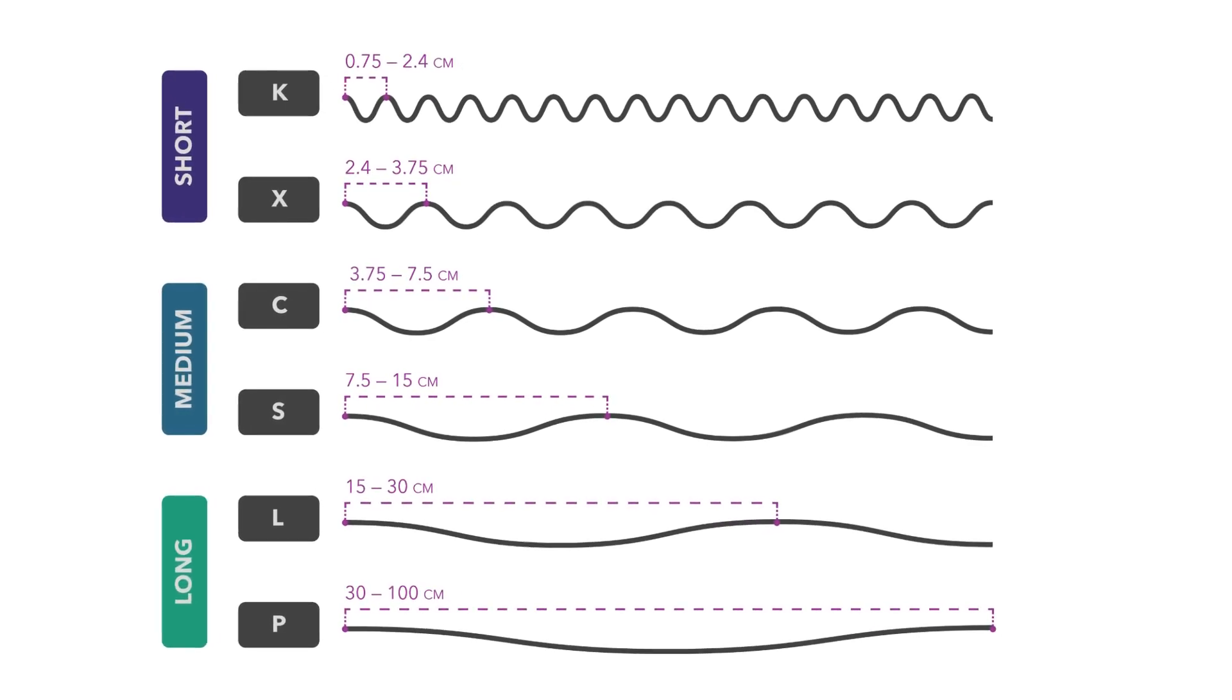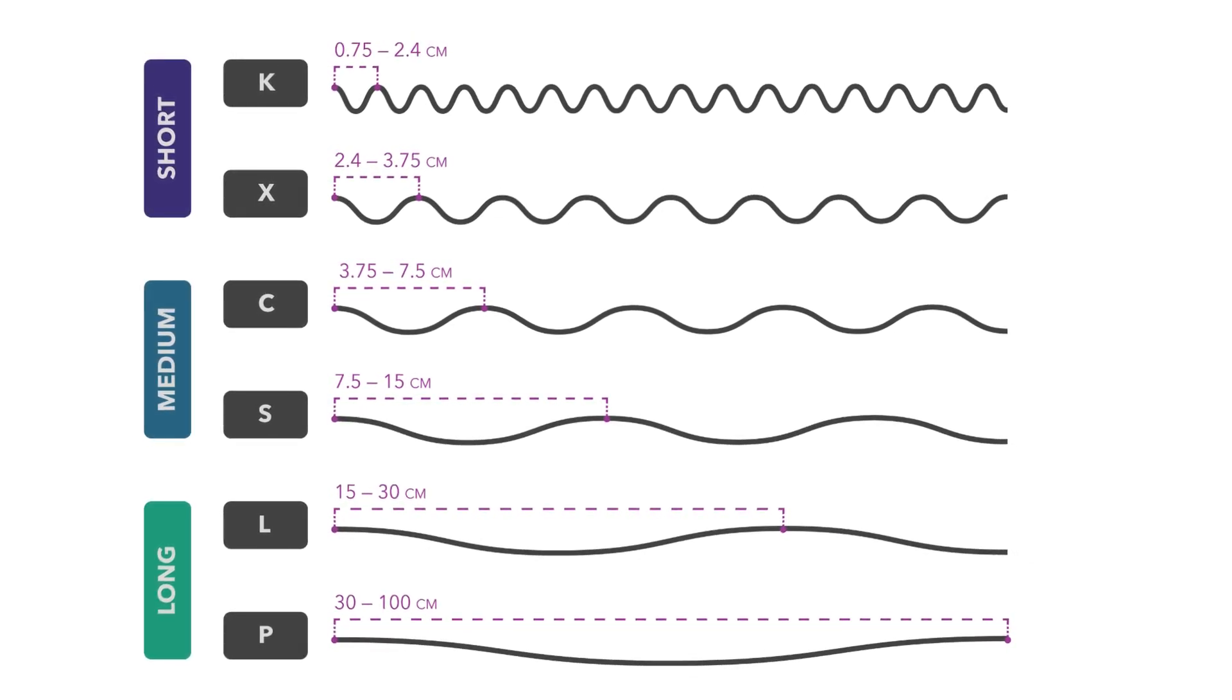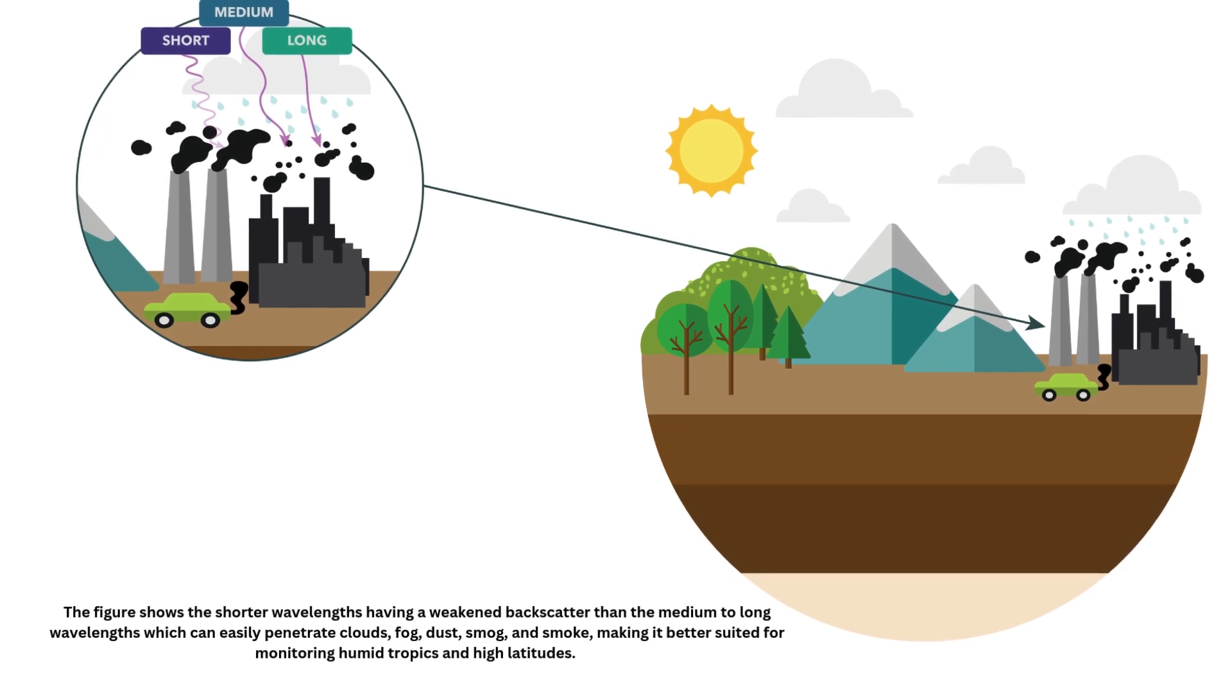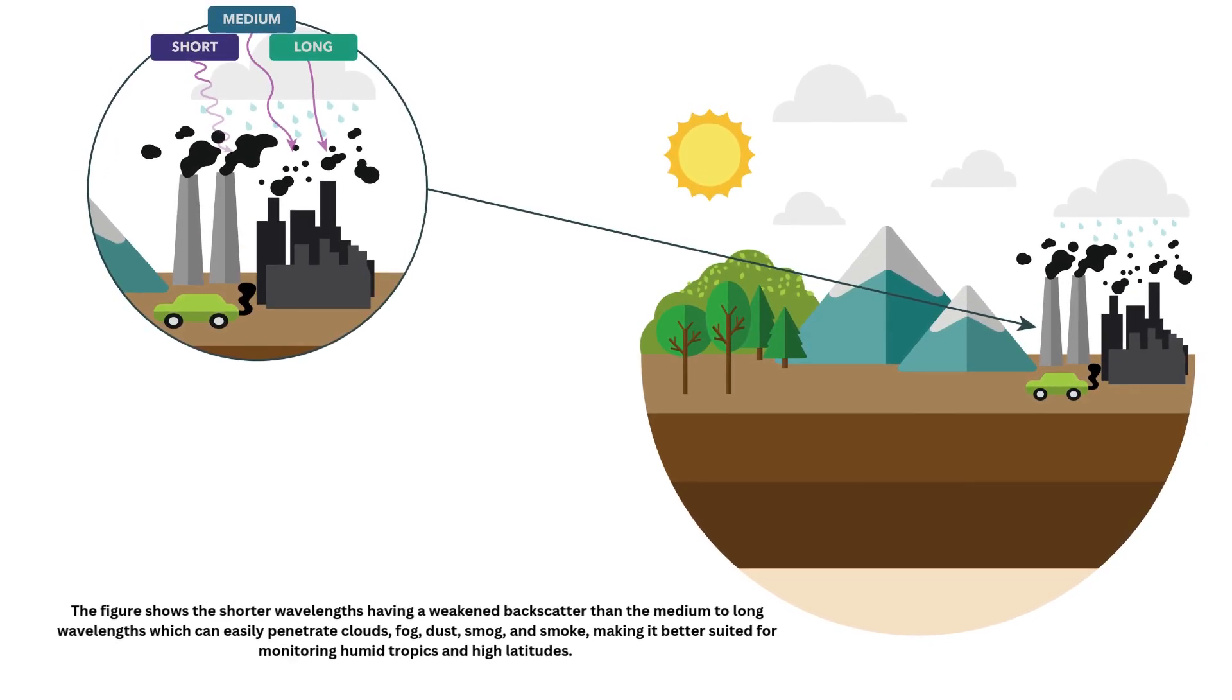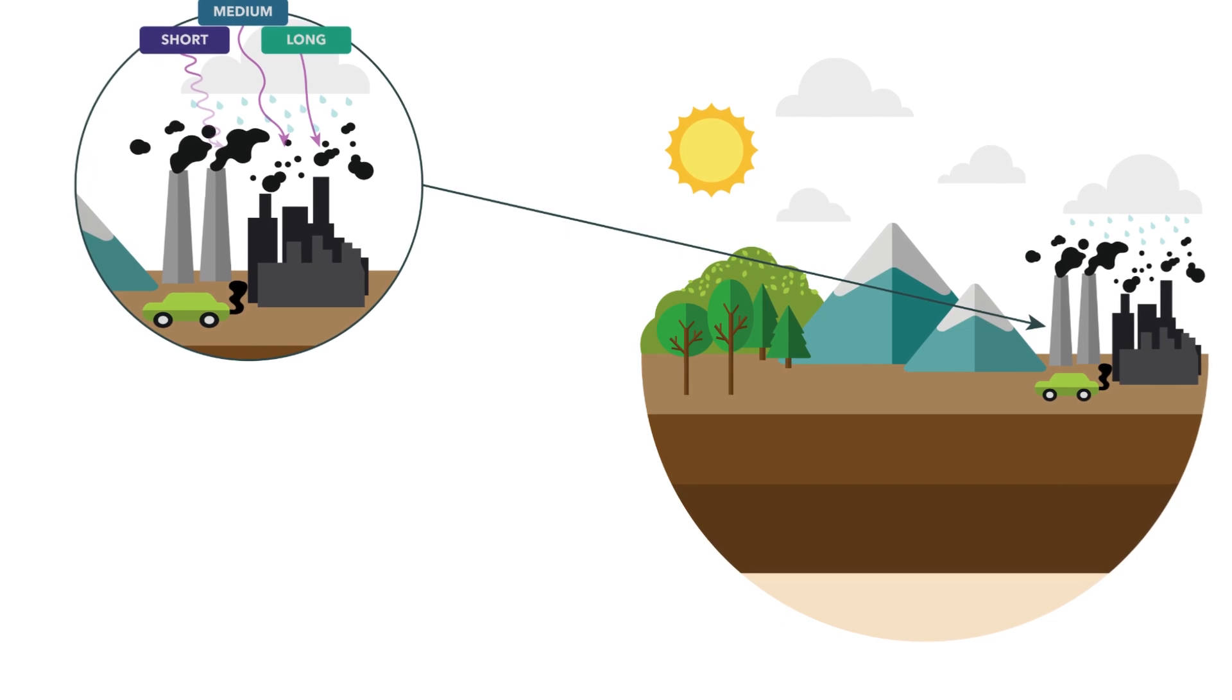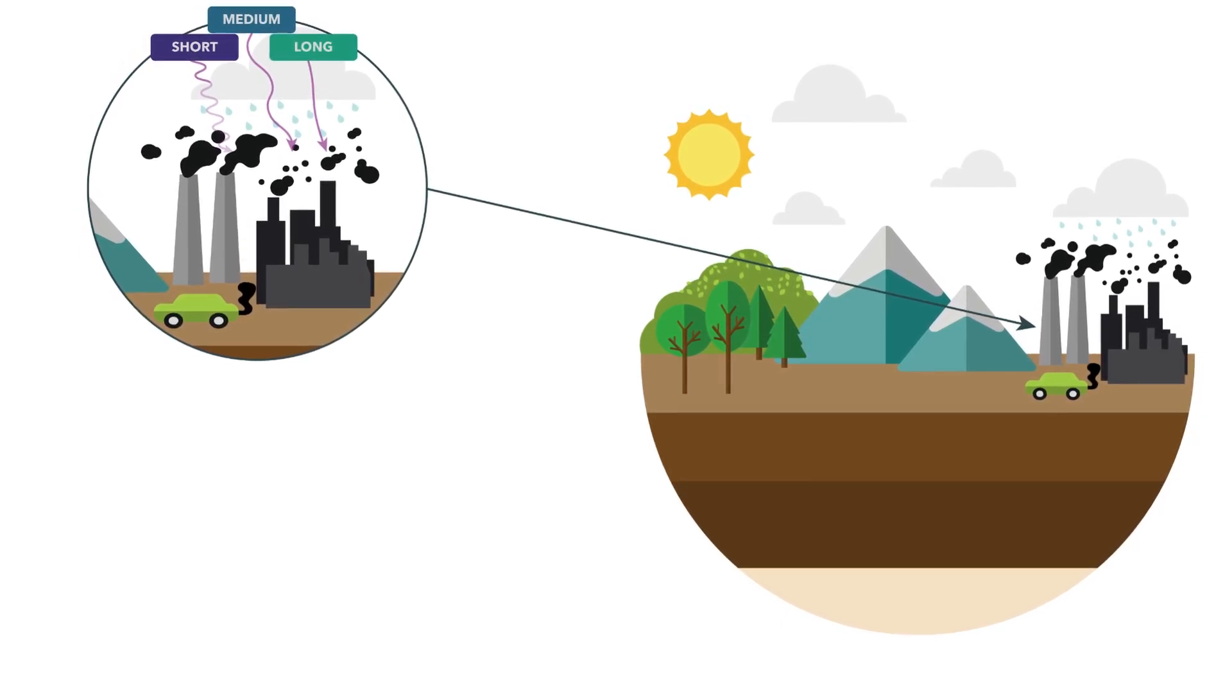The microwave wavelengths characterizing SAR systems also provide distinct information about the physical properties of the Earth's surface, such as roughness, density, and moisture content. Microwave wavelengths typically scatter differently based on the feature that reflects them. If the wavelength is longer than the feature of interest, the feature will be undetected by the electromagnetic wave. Another important aspect is the interaction of the signal to an electric field.